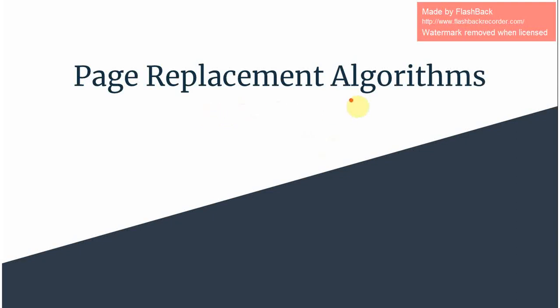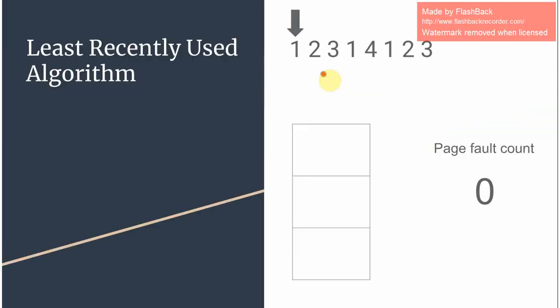Today we are going to look at page replacement algorithms. Page replacement algorithms are used to decide which page needs to be replaced when a new page comes in. The first algorithm is the least recently used algorithm. In this algorithm, the page to be replaced is the one which is least recently used.